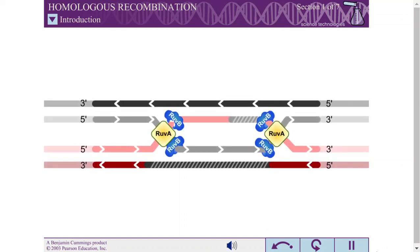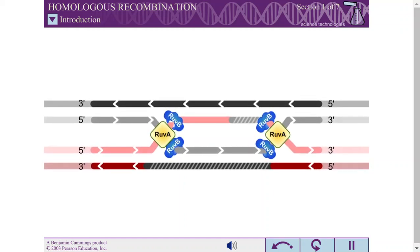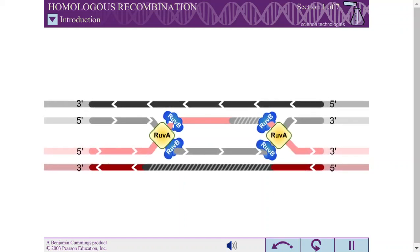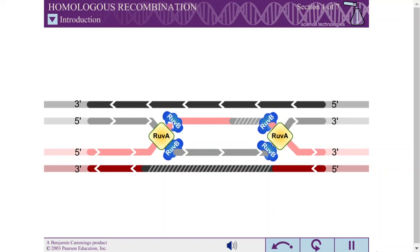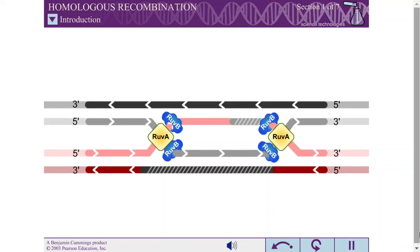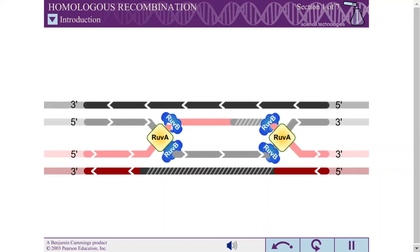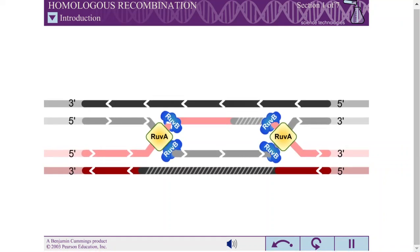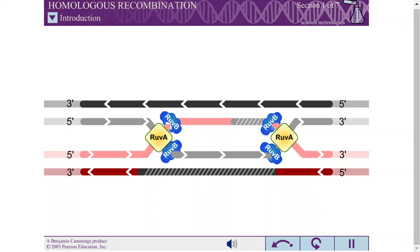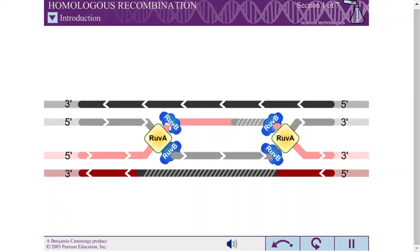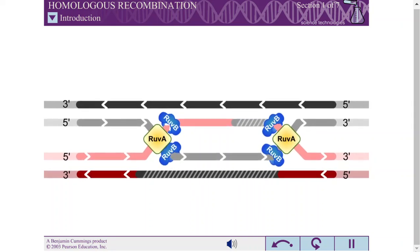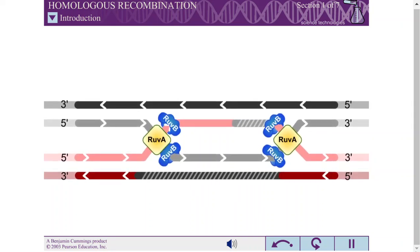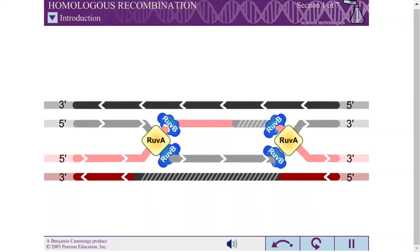Homologous recombination is the exchange of similar DNA sequences between different DNA molecules. Cells use homologous recombination to introduce genetic variation, as well as to repair damaged DNA.